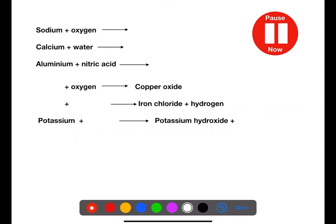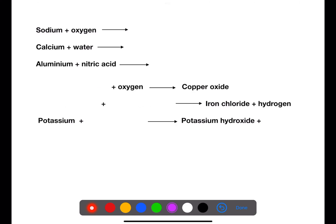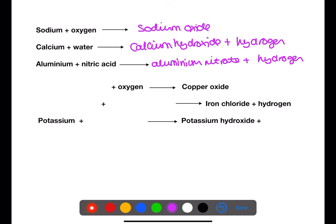Pause the video now and try these examples. Sodium plus oxygen will make sodium oxide. Calcium plus water will make calcium hydroxide and hydrogen. Aluminium plus nitric acid will make aluminium nitrate and hydrogen. Copper plus oxygen will produce copper oxide. Iron plus hydrochloric acid will produce iron chloride and hydrogen. Potassium plus water will give potassium hydroxide and hydrogen.